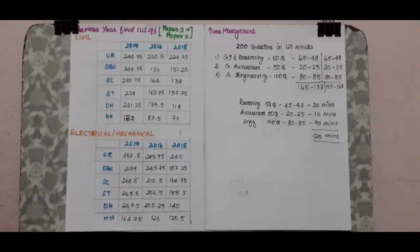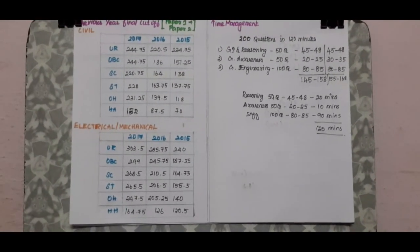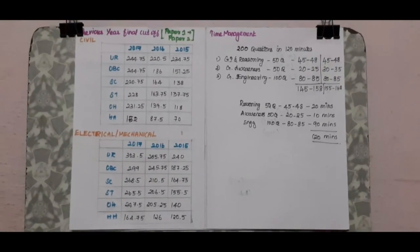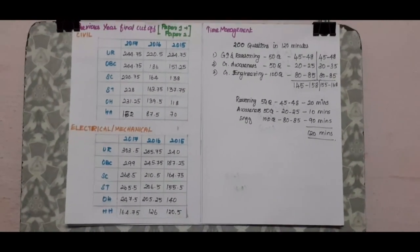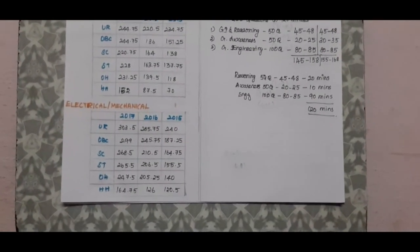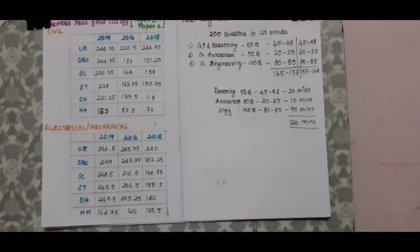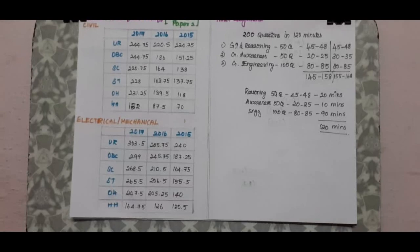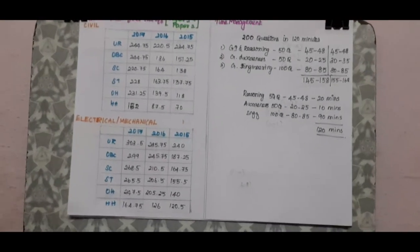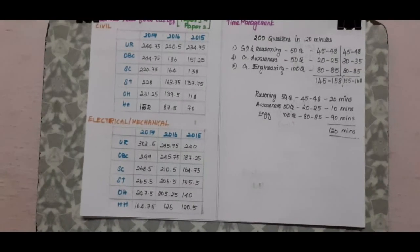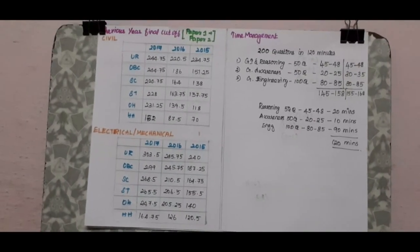Next is how to manage the time. In total, we have 2 hours. There are many questions, so we must manage carefully. Take about 15 minutes for general awareness — aim for 20 to 25 questions there. Learn more to maximize your score.